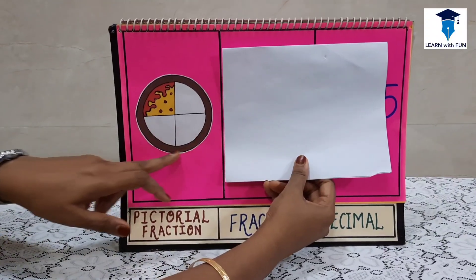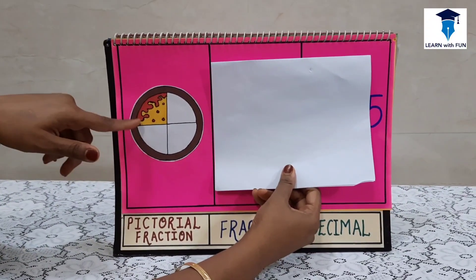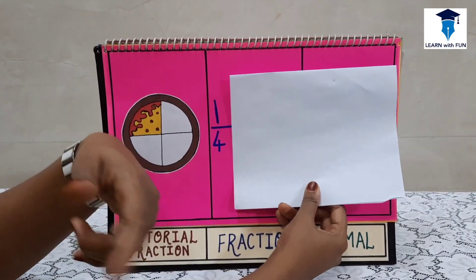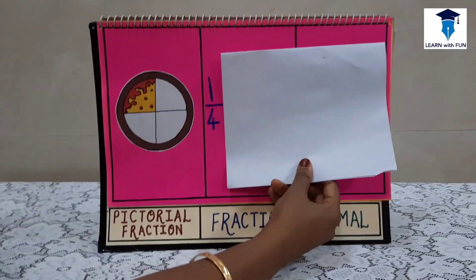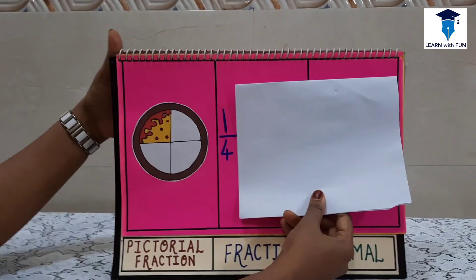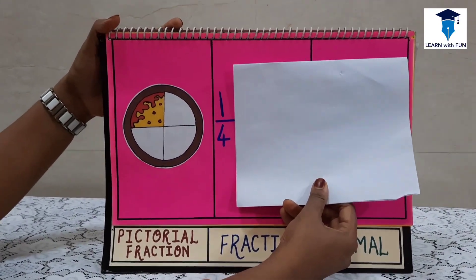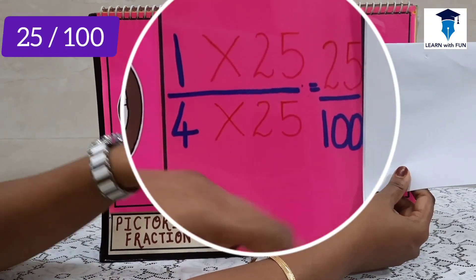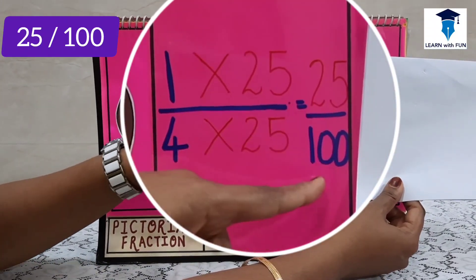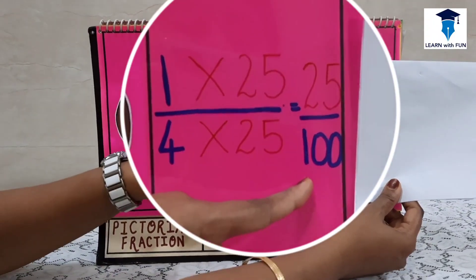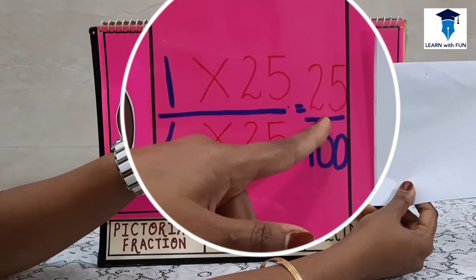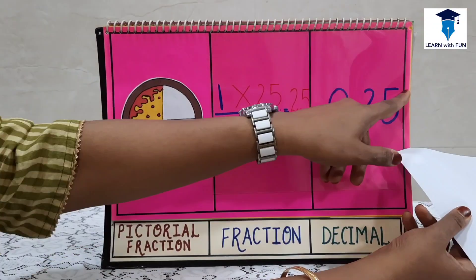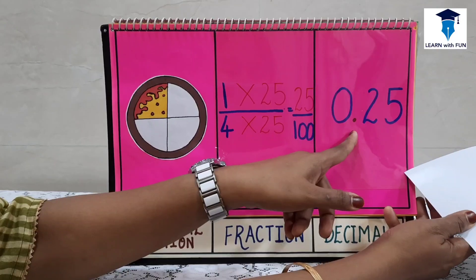Let's take another example. If there are 4 pieces of pizza, 3 are eaten and 1 is left, the fraction is 1 upon 4. We need to convert 4 to a multiple of 10. Since 4 × 25 = 100, we also multiply the numerator: 1 × 25 = 25. So 1 upon 4 and 25 upon 100 are equivalent fractions. Now there are 2 zeros at the denominator's place, so we write 25 and count 2 places from the right to place the decimal, giving 0.25.